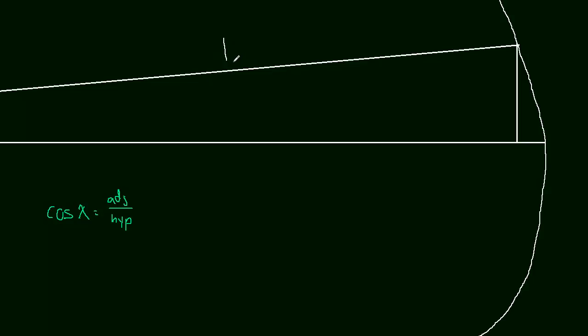And in this case, the hypotenuse is just one. The hypotenuse is the radius, which is one unit circle. So the cos of x is just equal to the adjacent side of that triangle. So that means that this whole side here, because this is the whole triangle, is just equal to cos of x. So the cosine of our angle.